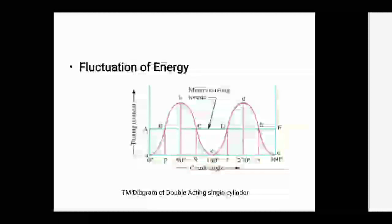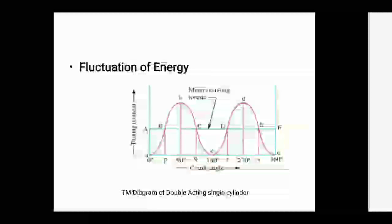In actual practice, the engine is assumed to work against the mean resisting torque. The AF line is the mean resistance torque line, and this horizontal AF line cuts the turning moment diagram at points B, C, D, and E. The area of rectangle AAFE is proportional to the work done against the mean resistance.